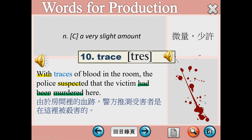The police警方懷疑這件事情，suspect，警方懷疑 the victim had been murdered here，這裡有一個過去完成式，表示發生的比過去這個動作更早，所以我們用過去完成式。我們懷疑這個受害者他是遭到謀殺的，謀殺動詞murder。